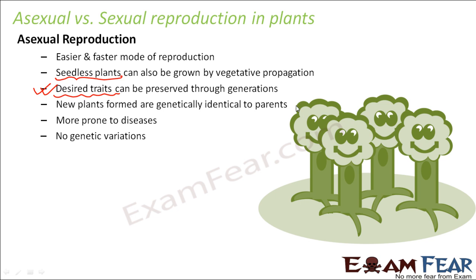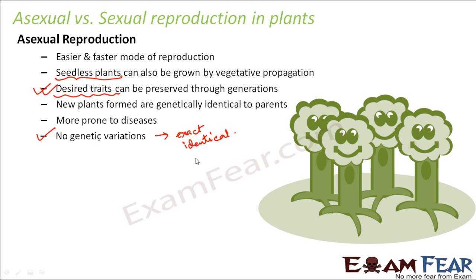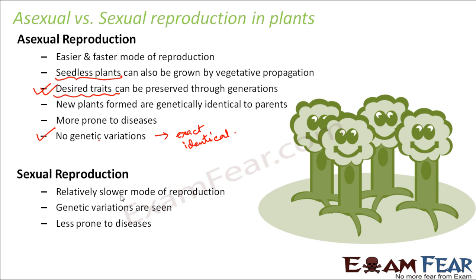New plants formed through asexual reproduction are genetically identical to parents — since it is just one plant giving rise to a new plant, the new plants are exactly identical to the previous plant. Asexual plants are also more prone to diseases because there is not much built-in protection against diseases when plants are produced from their roots, stems, or leaves. There are no genetic variations and no new features seen in the new plants.